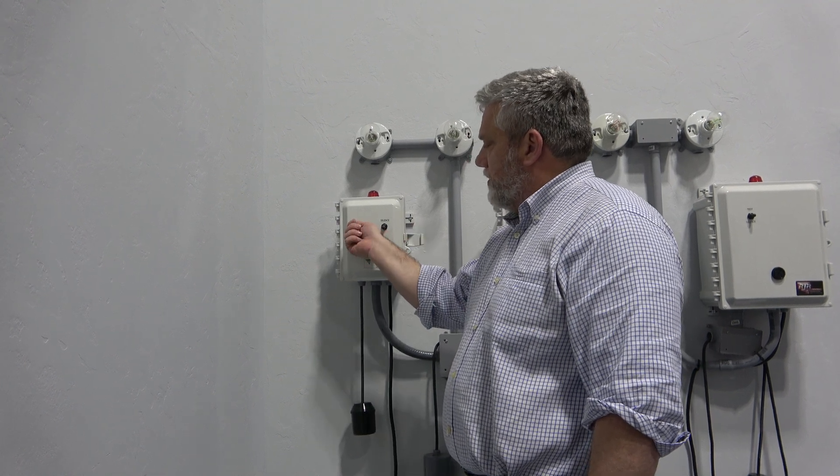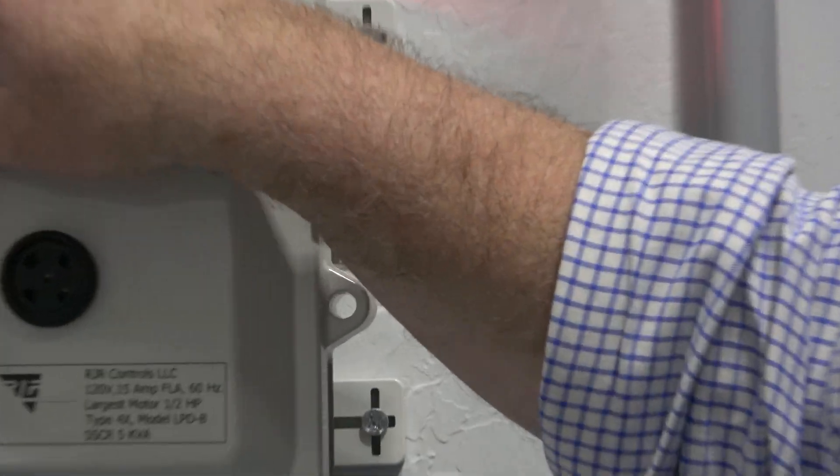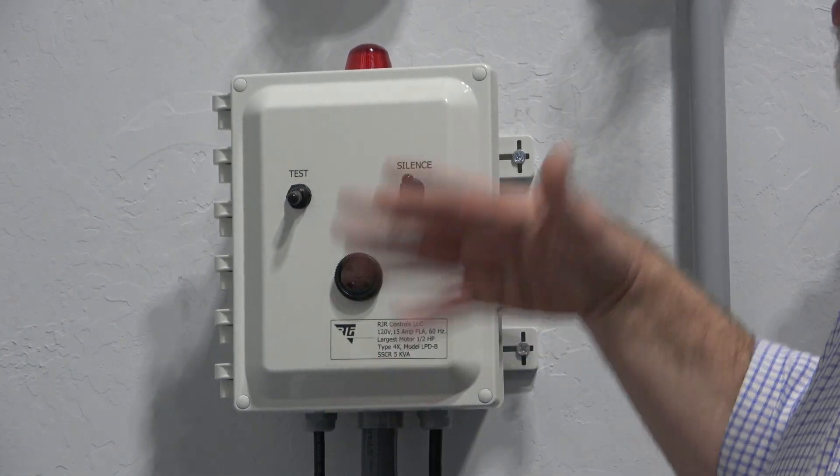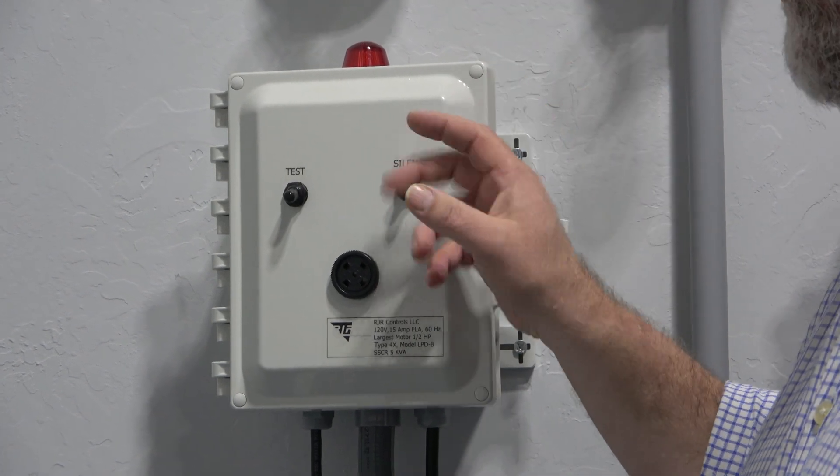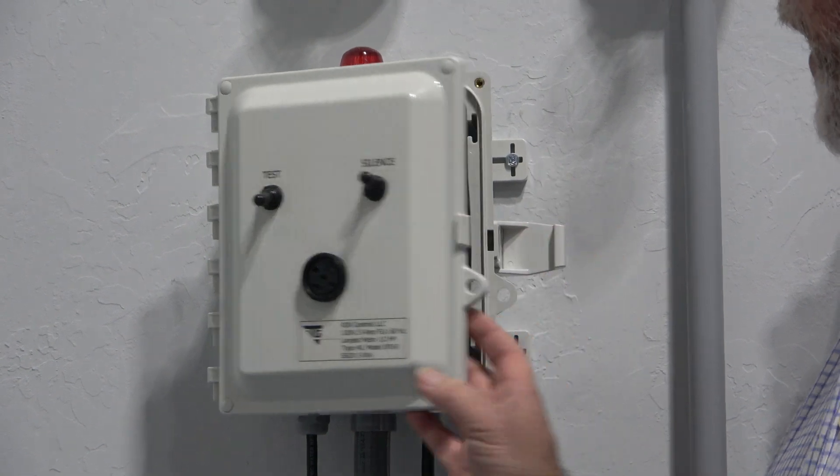You have a test button on the front for your alarm and a silence button so it won't go off continuously. If the alarm goes off, you can silence it so you know it's gone off but it doesn't have to beep the whole time. That's just some standard features most panels have.